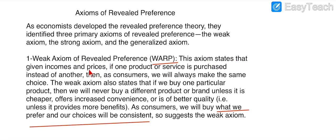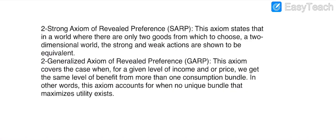The Weak Axiom states: if a person knows his income and prices, and he continues to purchase the same product even though other products of better quality, more benefit, or lower price are available in the market, the consumer is loyal to the same product. This consistency in preferences represents the Weak Axiom.